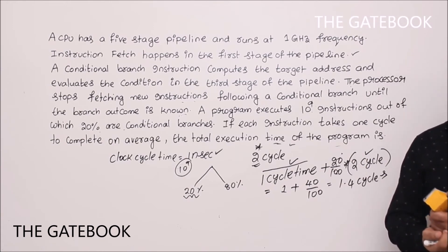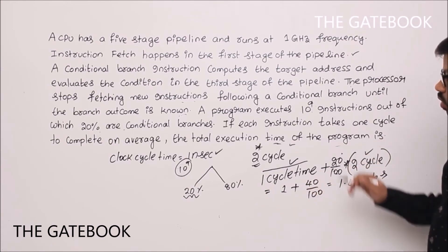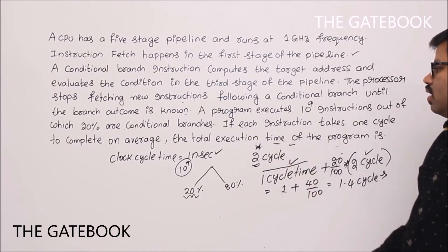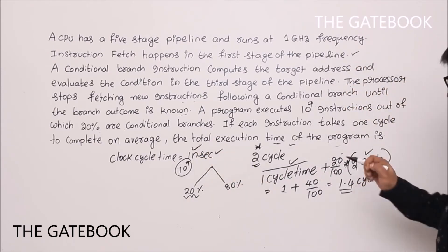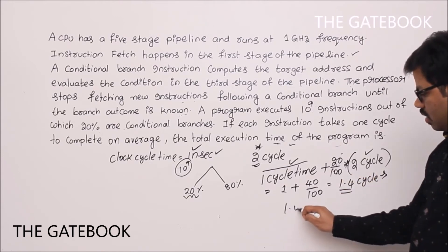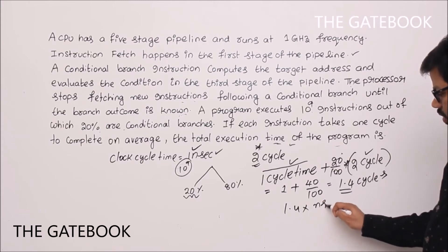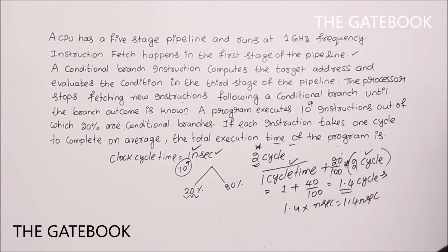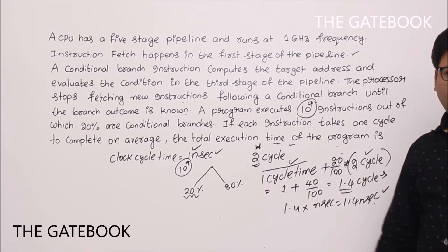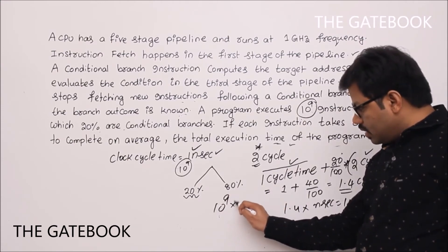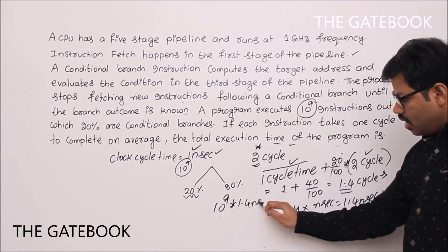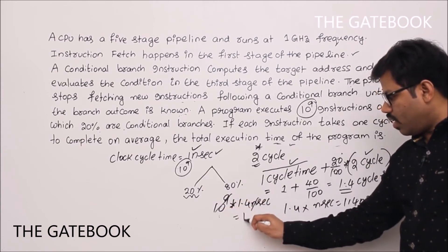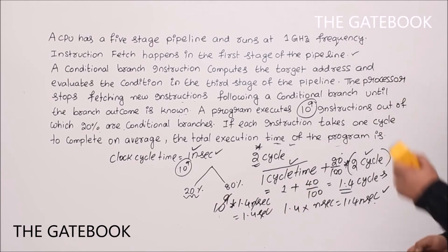We have 1.4 cycles per instruction and each clock cycle is one nanosecond, so each instruction takes 1.4 nanoseconds on average. But the program has 10^9 instructions, so total execution time = 10^9 × 1.4 nanoseconds. The 10^9 and nano cancel, giving an execution time of 1.4 seconds.